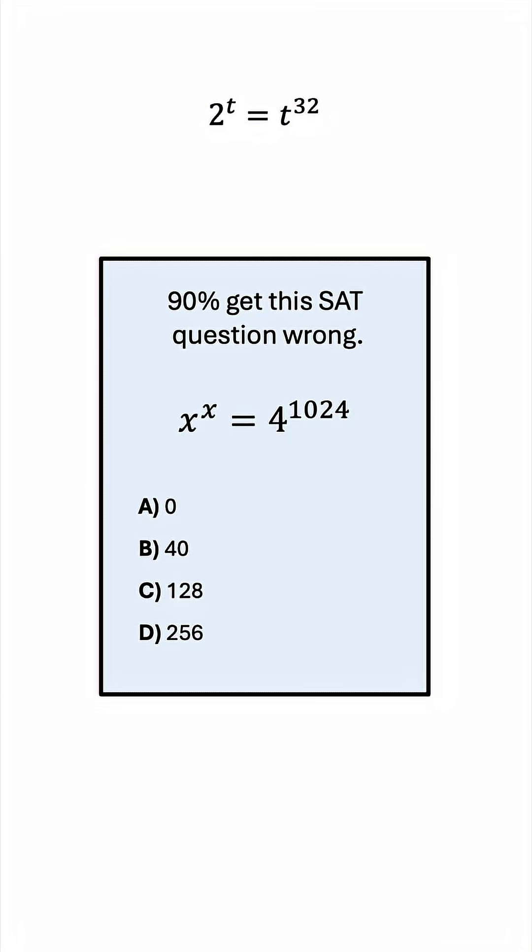The problem is difficult because the variable appears in the exponent once and in the base once. This reminds me of a video where we solved a problem involving x to the power of x. The strategy back then was to try and make the base and the exponent match. So let's do something similar here.